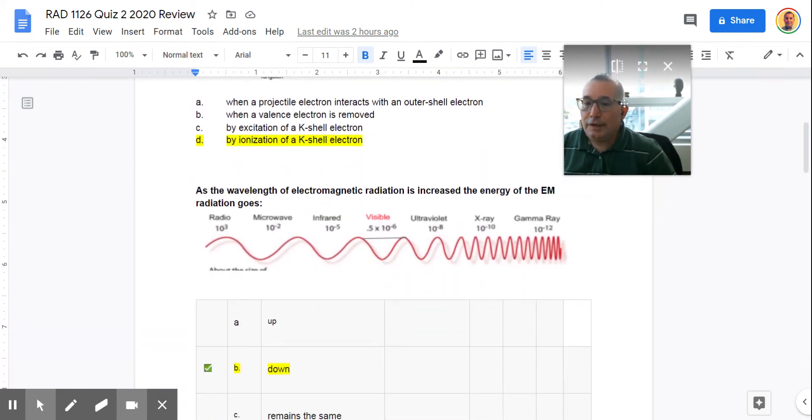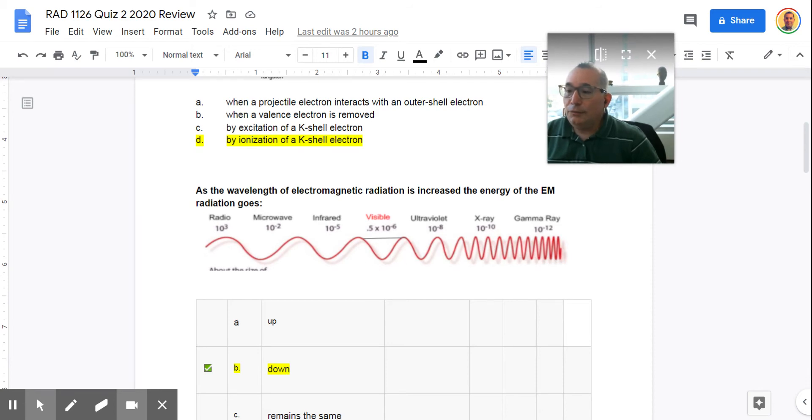So this question here is based on what the meaning is of wavelength. As the wavelength of electromagnetic radiation is increased, in other words it gets longer, the energy of the electromagnetic radiation will go down. So we're talking about going from ultraviolet, or let's say visible, to microwave. When the wavelength gets longer, the energy goes down.